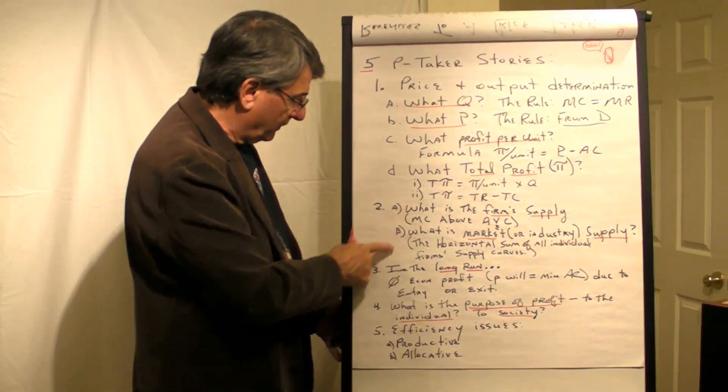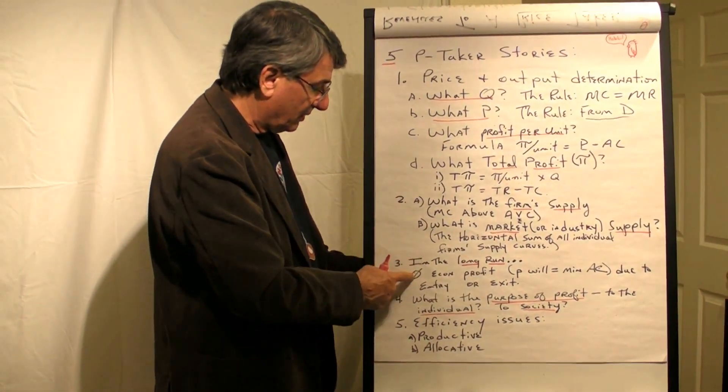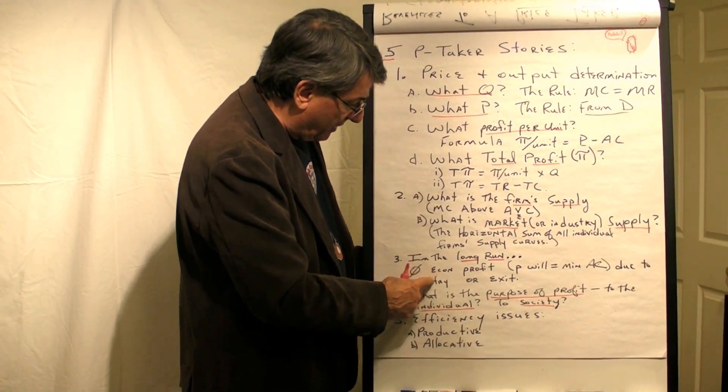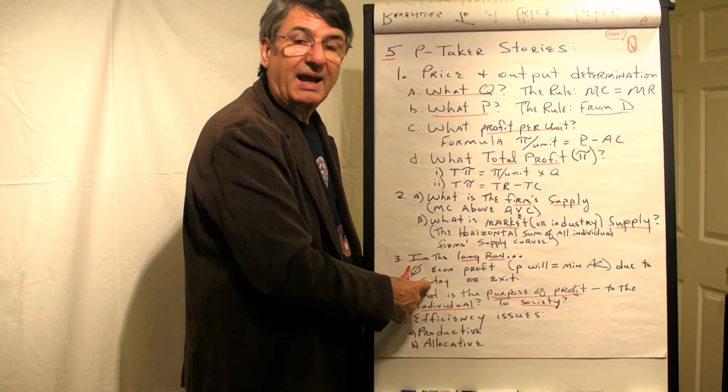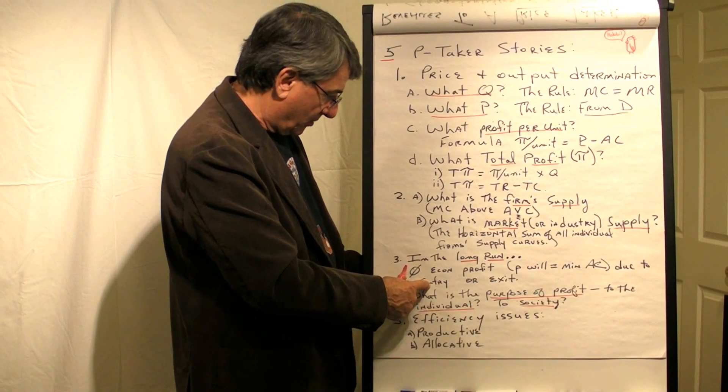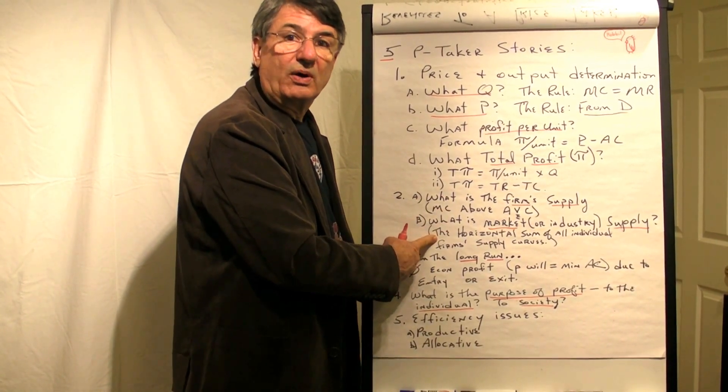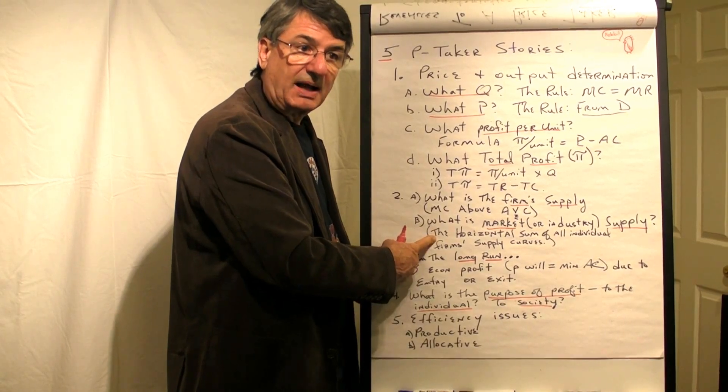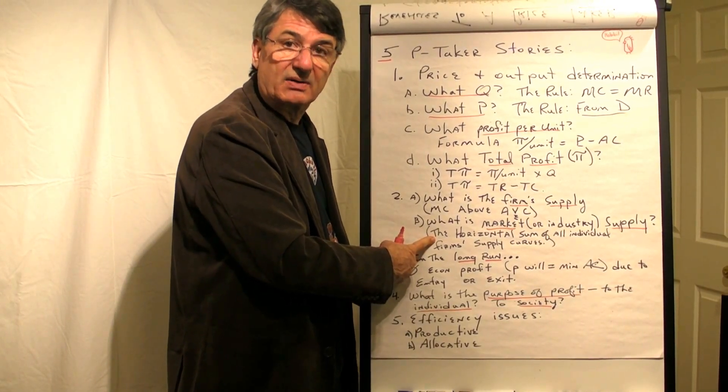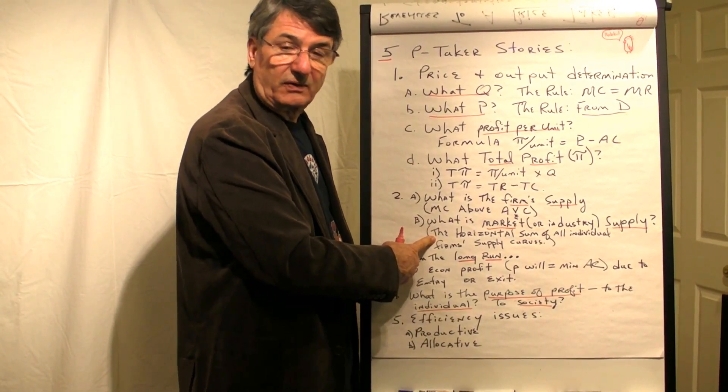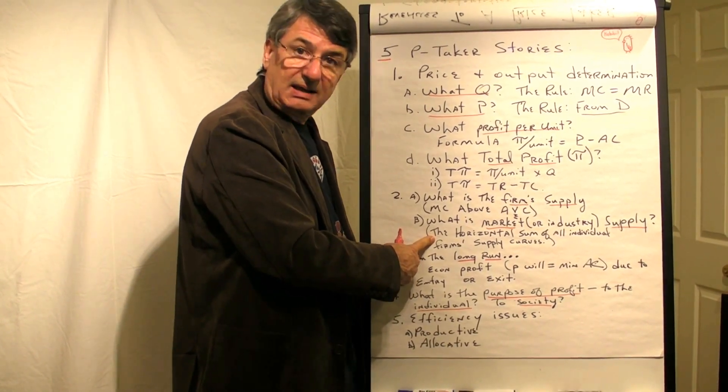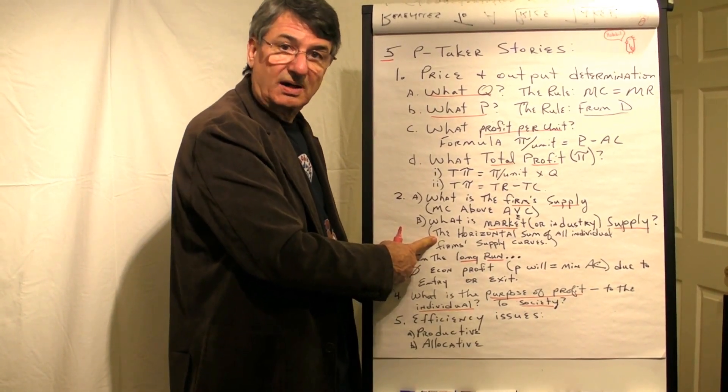We've shifted from the short run to the long run. If there is profit, firms will enter. When firms enter, because market supply is the horizontal sum of all individual supply, when new firms enter, the supply goes up and the price goes down until there's no more reason for firms to enter. That's where price is exactly equal to average cost.